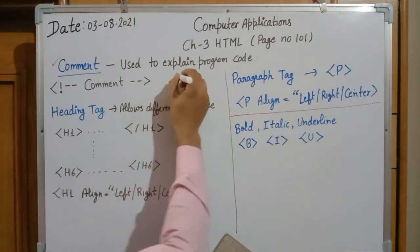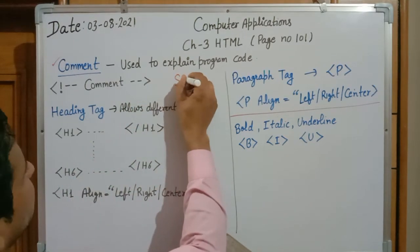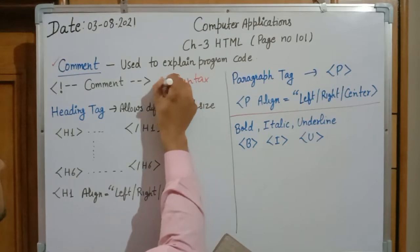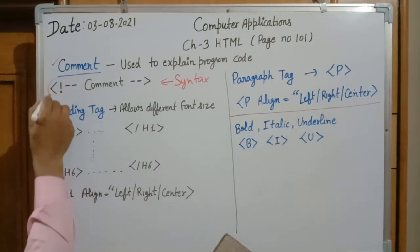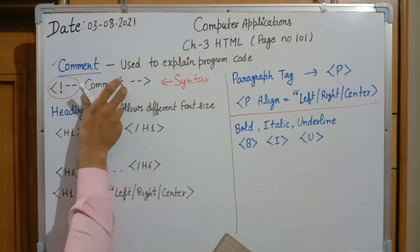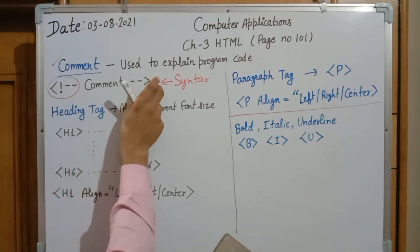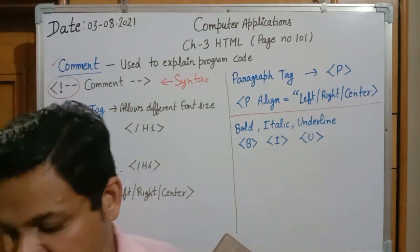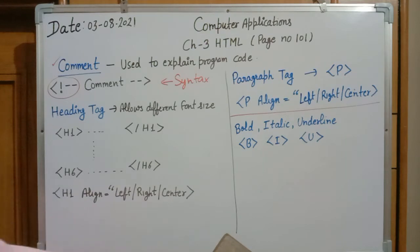Now see the syntax of a comment — how it will be written in a program. We start with an opening angle bracket, then an exclamation mark followed by two hyphens. We write the comment text here, and after that we close the comment with two hyphens followed by a closing angle bracket.